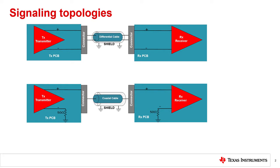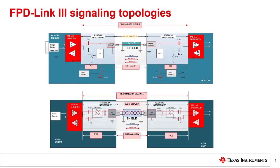Depending on the signaling topology, a transmission channel can be differential or single-ended. In the top diagram I'm showing a differential channel consisting of a serializer PCB, a differential cable assembly, and a deserializer PCB. In the bottom figure I'm showing a single-ended channel consisting of a serializer PCB, a coaxial cable assembly, and a deserializer PCB. FPD-Link 3 supports both differential and single-ended signaling. In both cases, a differential cable or coaxial cable carries the high-speed video data and lower-speed bidirectional control data across the transmission channel.